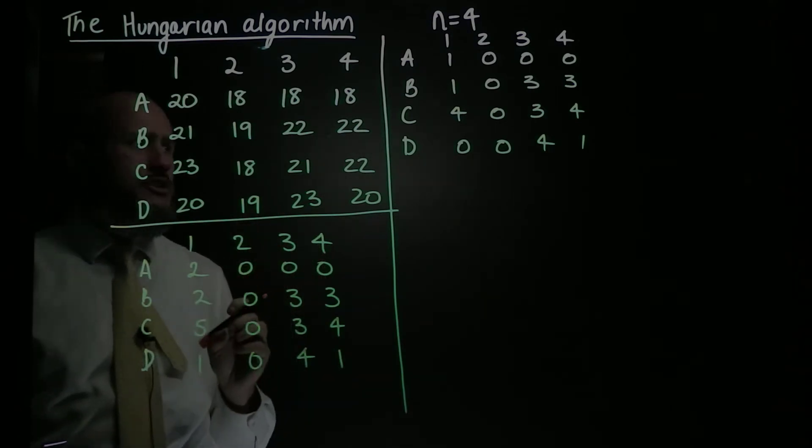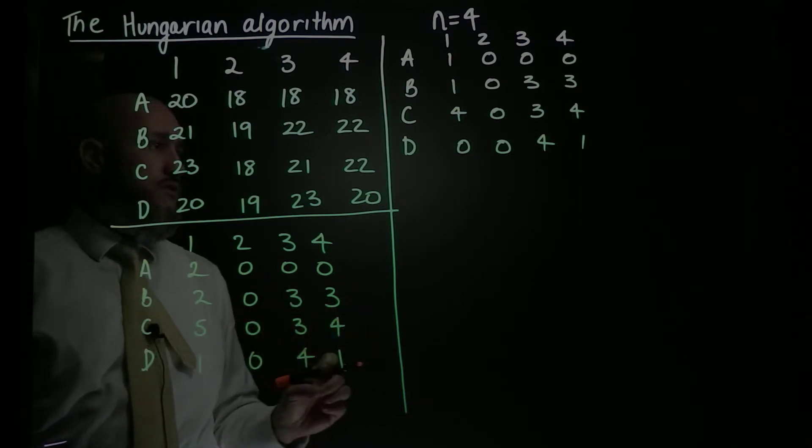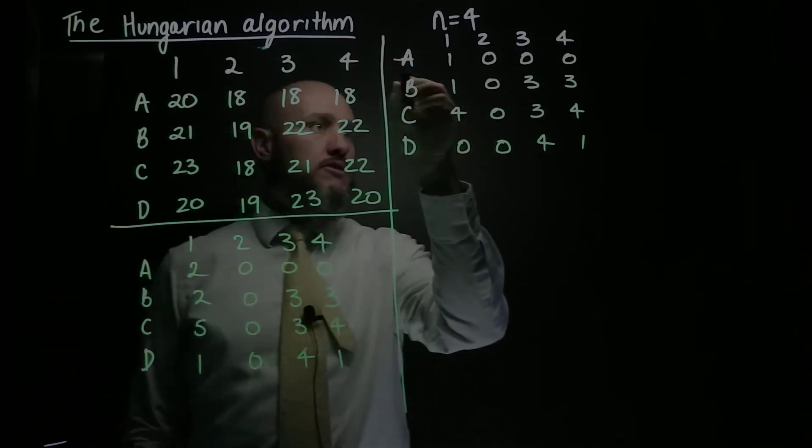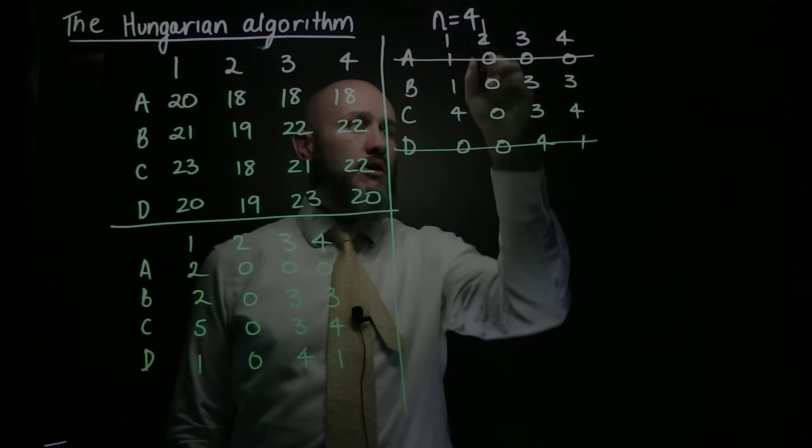I go to step three and I consider, can I cover this with less than n straight lines, and n is 4 in this case. Now I can see here, I can see that I can cover it with a straight line there, a straight line there, and a straight line here.